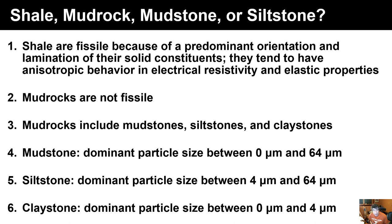A shale is by definition a fissile rock because its component grains and clays have a predominant orientation or lamination, causing anisotropy in electrical conductivity and elastic properties. Mudrocks, on the other hand, are not fissile — they lack a predominant orientation and do not exhibit anisotropy.